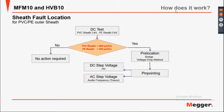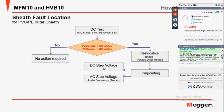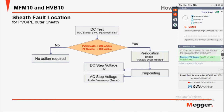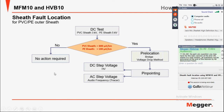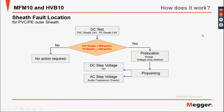Sheath fault location workflow: PVC, PE outer sheath. PVC sheath test at 3 kV, or PE sheath test at 5 kV, depending on the current and voltage it holds. If it holds, no further action required. If the sheath current is less, then use the bridge fault method. Check whether an auxiliary wire is available, and if so, determine if pinpointing is possible and whether the cable is in a duct.